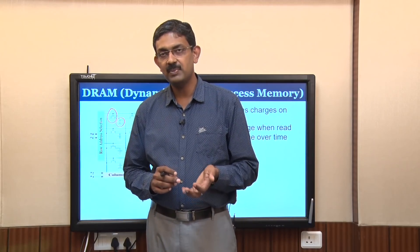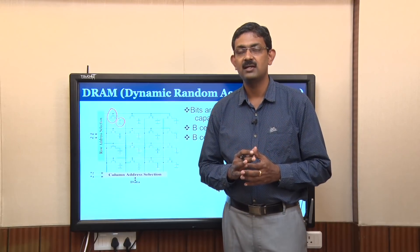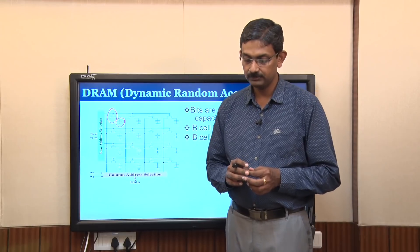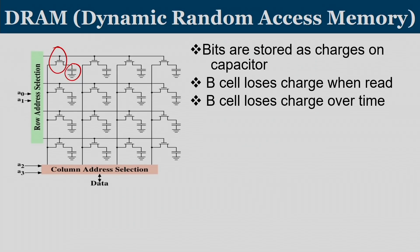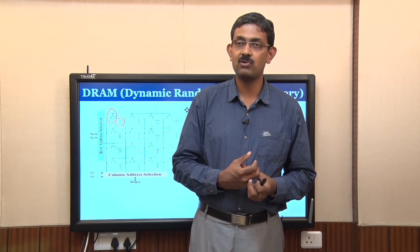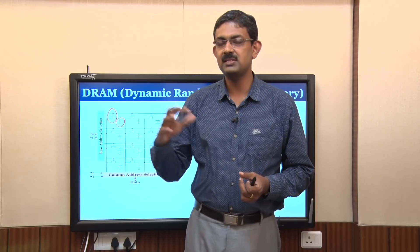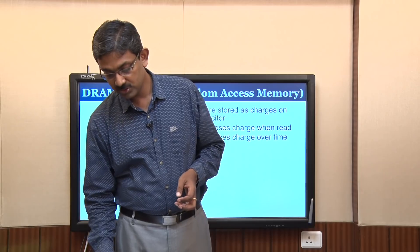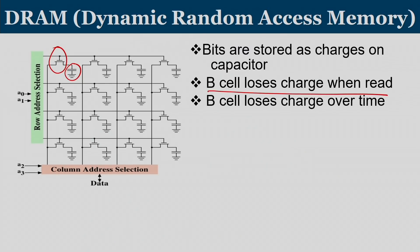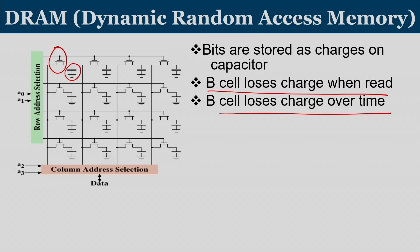If the capacitor is charged, value 1 is stored; if the capacitor is not charged, value 0 is stored. The property of this capacitor is that when you read data, the capacitor discharges. If sufficient potential is discharged, the sense amplifier recognizes that the stored value was 1. Since reading discharges the cell — this is called a destructive read — and capacitors also lose charge over time due to leakage, any reading will discharge the capacitor and the charge also decays over time.